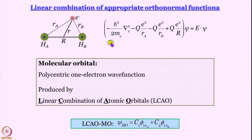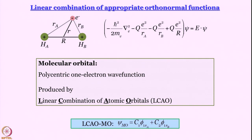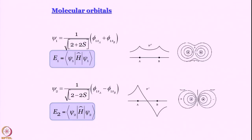We have formulated the Schrödinger equation this way and said that we are going to construct the molecular orbital not by solving the Schrödinger equation directly, even though it is possible. We are going to construct it by a unique technique: taking a linear combination of atomic orbitals, and when we do that, this is where we are.